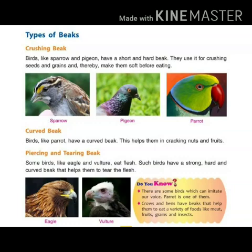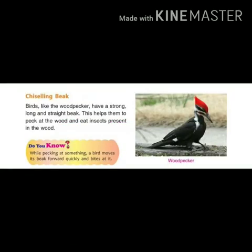To recap: first is the crushing beak, second is the curved beak, and third is the perching and tearing beak. The crushing beak is found in sparrow and pigeon. The curved beak is found in parrot. The perching and tearing beak is found in eagle and vulture — because they eat flesh, their beak is very strong, hard and curved.